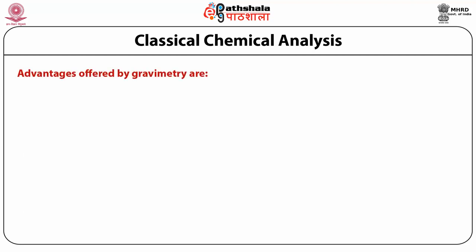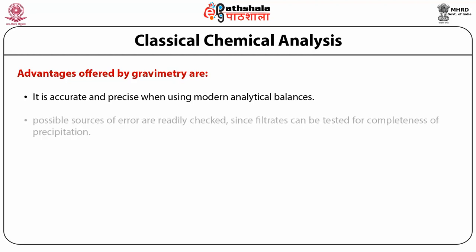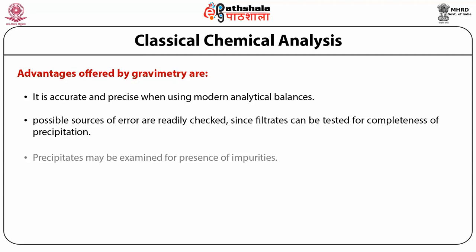Gravimetric determinations have the following advantages: these determinations are accurate and precise when using modern analytical balances. Possible sources of error are readily checked since filtrates can be tested for completeness of precipitation. Precipitates may be examined for presence of impurities. Further, it is an absolute method and it is inexpensive.